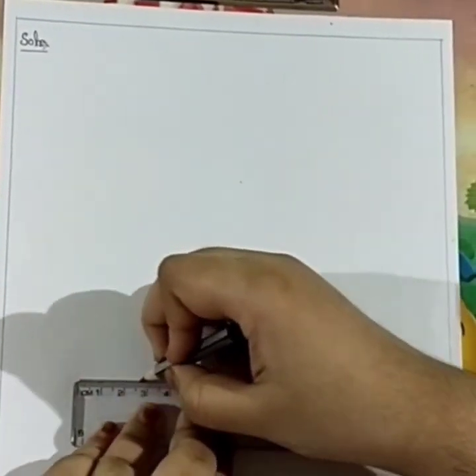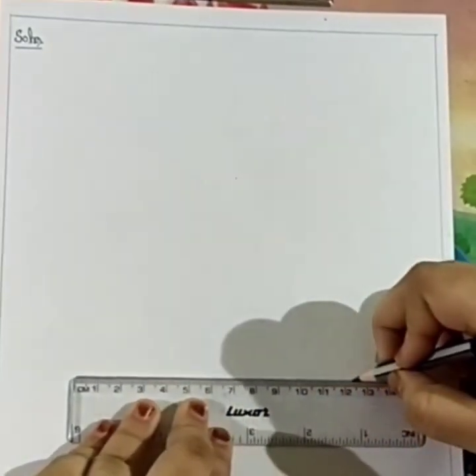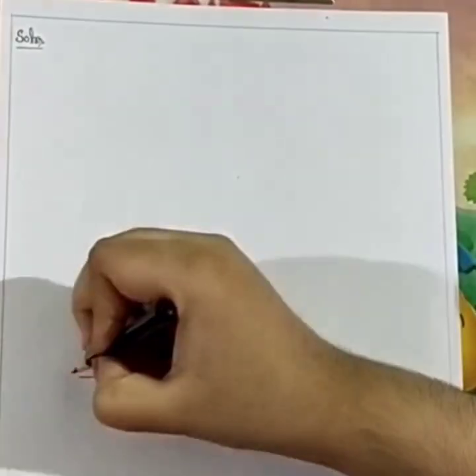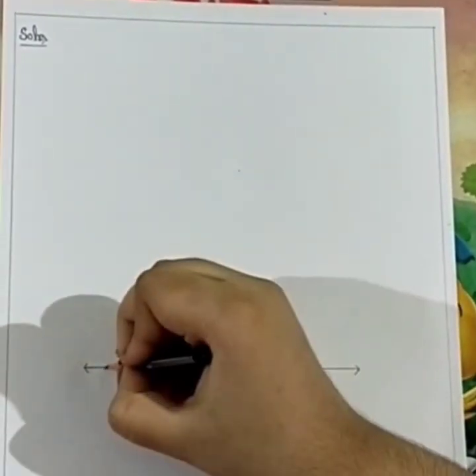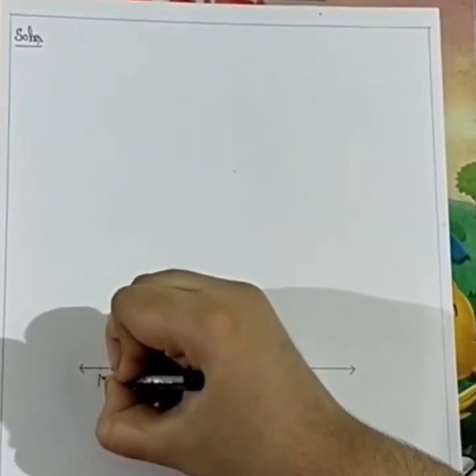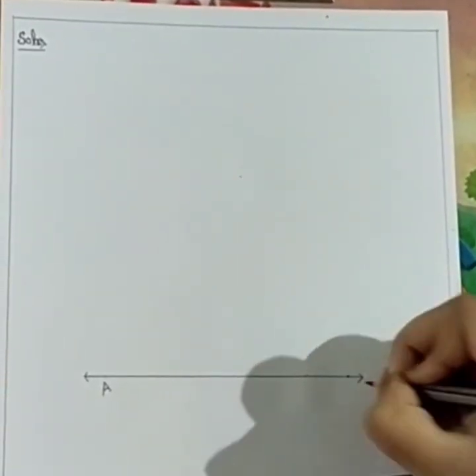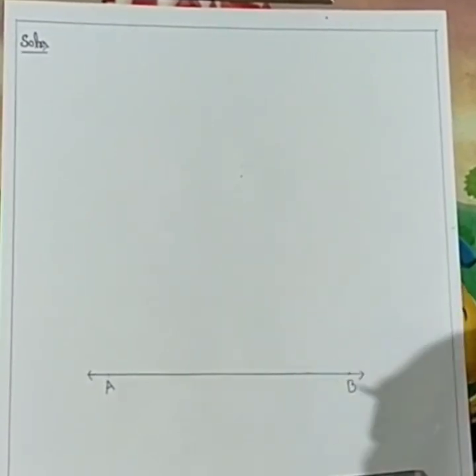It can be of any measurement. I have drawn. Now, I will name it as A and B.